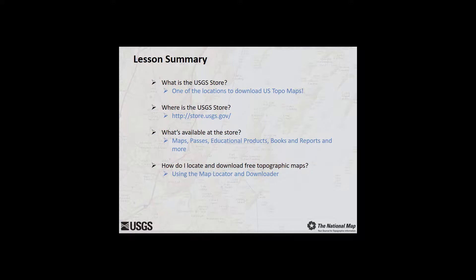In this lesson, we briefly discussed the USGS store, how it's accessed, and the types of products available at the store. We also discussed how you can access US Topos and historical topographic maps utilizing the map locator and downloader. The US Topo itself will be discussed in more detail in a future lesson. This concludes Lesson 9A. Please return to the course homepage to continue to Lesson 9B.